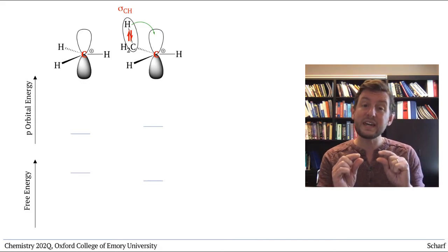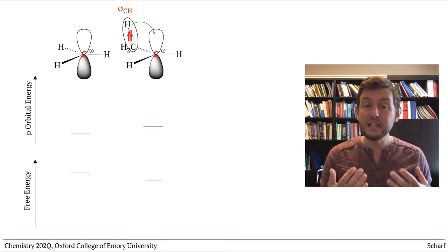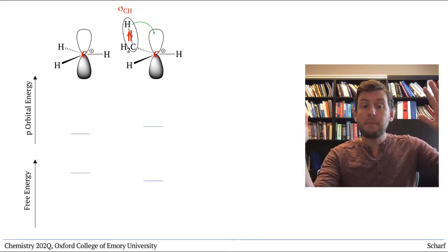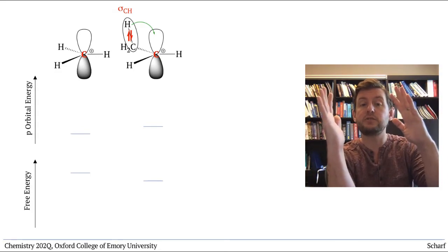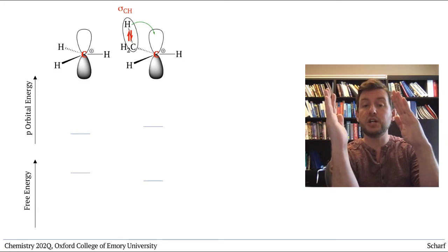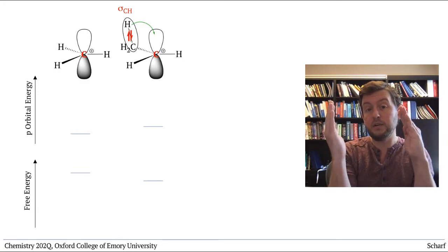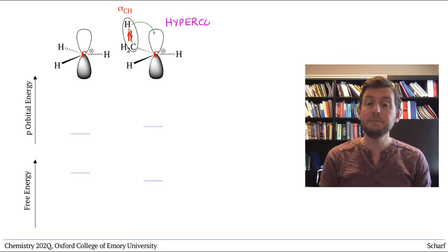This quite weak effect of a sigma bonding orbital partially sharing its electron density with an adjacent empty orbital is called hyperconjugation.